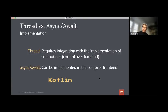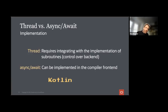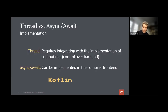Kotlin is one such example: it compiles to Java bytecode as just a frontend with no influence over the Java backend. It also compiles to JavaScript without access to the JavaScript backend, and to Android without access to the Android backend. This is why async-await is the only possible choice for Kotlin.